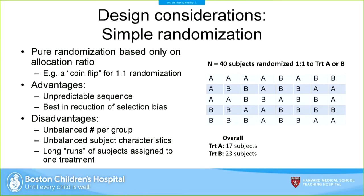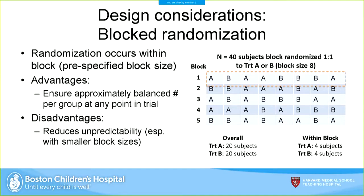One solution is blocked randomization — randomizing within specific blocks of patients. In an example with a block size of eight, within each row of eight subjects there's a balanced number of treatment A and B assignments, repeated across five blocks. The advantage is ensuring roughly balanced numbers of individuals in each treatment group at any point in the trial. The disadvantage is reduced unpredictability, especially with smaller block sizes. For example, if your block size is four and two individuals have already been assigned to treatment B, you can guess that patients three and four will get treatment A.